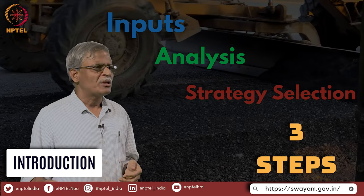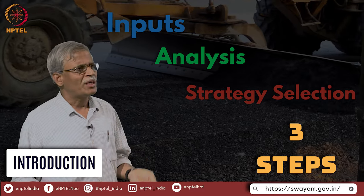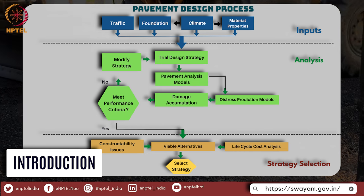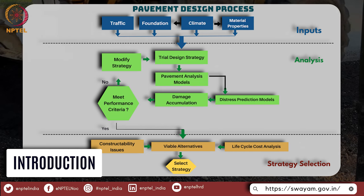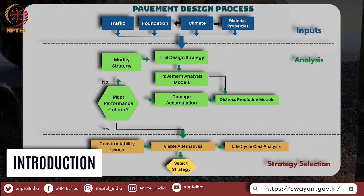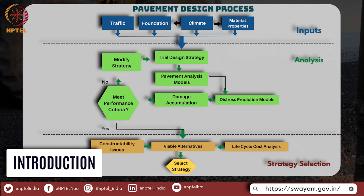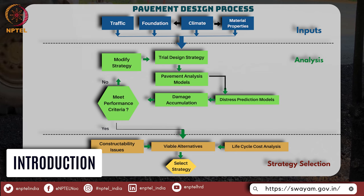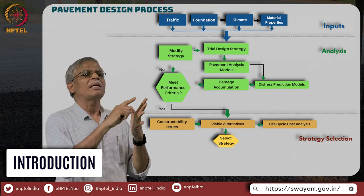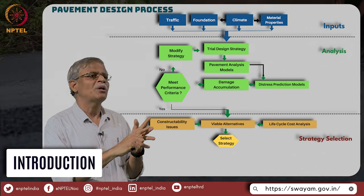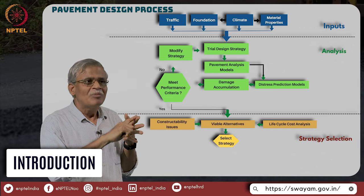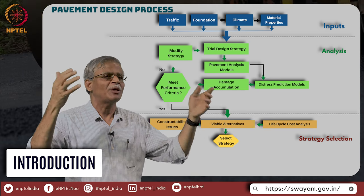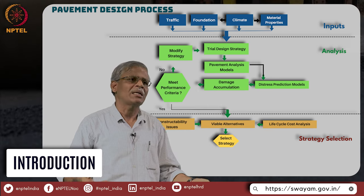As far as bituminous pavements are concerned, it is more about proof checking. But before that, what are all the various input parameters that you are really looking at? You are basically looking at the soil on which you are going to construct the pavement, the location because environmental conditions play a critical role, the axle load, the traffic that is going to come on the pavement, and the kind of material that you are going to use. So all these factors are the input that you should have in hand before you do the design.